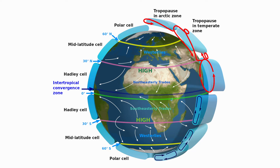This circulation explains how air and storm systems travel over the Earth's surface. The Earth's atmosphere moves in response to differences in temperature at the equator and the poles. As these air masses rise and fall, the spin and tilt of the Earth causes them to form a circulation cell.